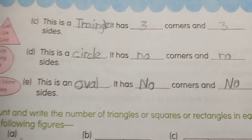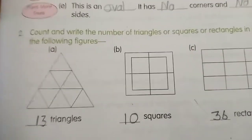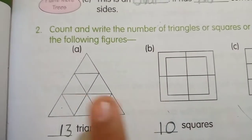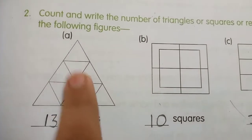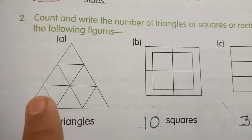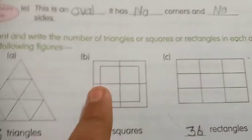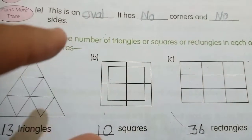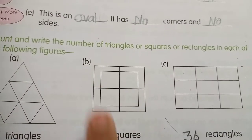Question number 2: count and write the number of triangles or squares or rectangles in each of the following figures. So let's count triangles: one, two, three, four, five, six, seven, eight, nine, ten, eleven, twelve, thirteen. So there are 13 triangles.